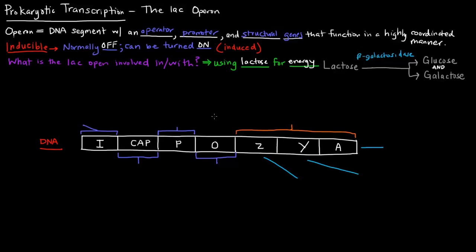This here is the DNA segment concerned with all of that — this is the lac operon. The lac operon has a bunch of different important features. The first portion of the DNA is called the regulatory gene. Now in the case of the lac operon, this is an inducible system, which is why the 'I' is here — it represents inducible. Specifically, this regulatory gene encodes for a repressor protein, which we'll talk about in more detail shortly.